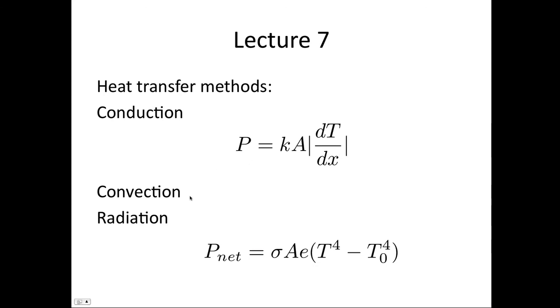We said there was also convection, where hot air rises, but the formulas for this were very complicated. There's also radiation, where the net rate of heat transfer through radiation is given by σ A ε(T^4 - T0^4). This is the temperature of the body in kelvins minus T0 to the 4, the temperature of the surroundings in kelvins.